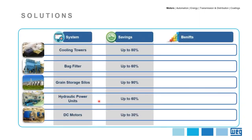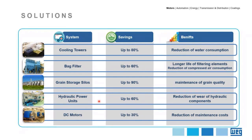Now I want to share some real case studies where VAG has implemented VFDs. From this table, it's possible to see the savings achieved and other benefits. For example, in a cooling tower application, we achieved up to 80% energy saving, but also a reduction in water consumption. Sometimes when we save electricity, other benefits can be achieved in the application as well. You can also find other case studies on our website, including videos and application details.